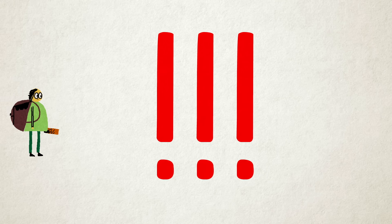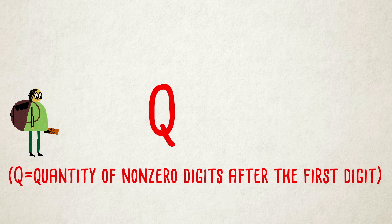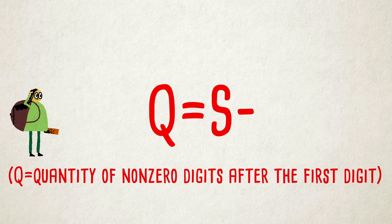Why go through all that? Well, we now know something important. The total quantity of non-zero digits that occur after the first digit is equal to the sum of these digits minus 1.